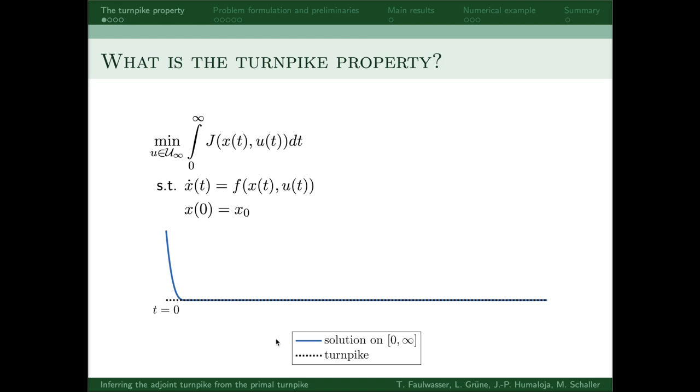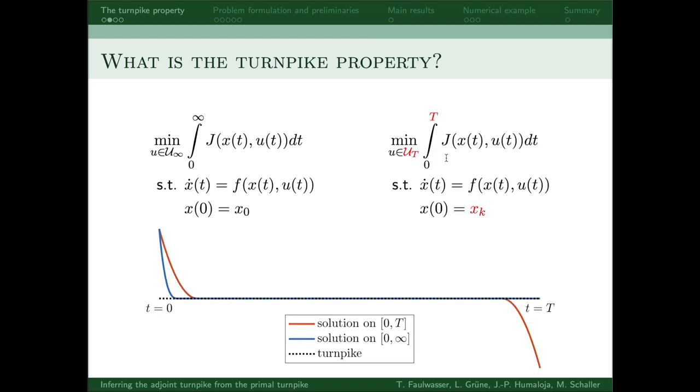To get to the turnpike property, let's consider the same optimal control problem on a finite time horizon from zero to T instead of the infinite horizon we had before. The optimal control problem is said to have the turnpike property if the optimal solutions of the finite horizon problems spend most of the time near the same steady state as the infinite horizon one.